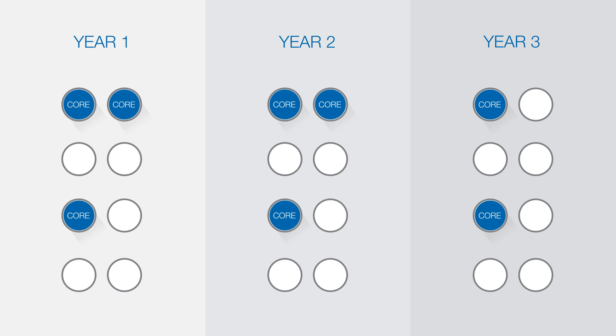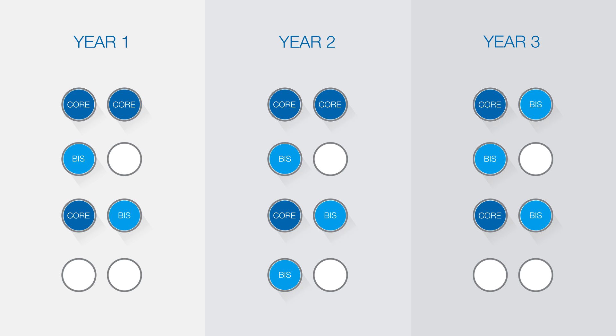All Information Technology students are required to have at least one major area of study. A major is made up of eight units within the study area. For example, after first year you decide you really like business information systems and make this your major.